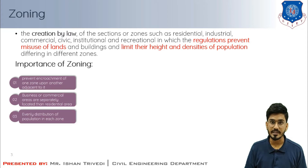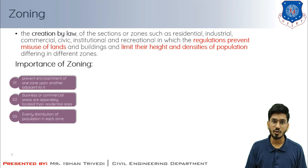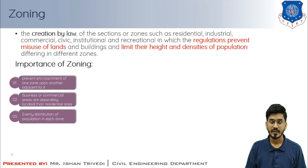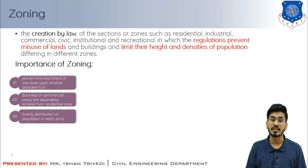Zoning prevents the encroachment of one zone upon another adjacent zone. For instance, the industrial area is located away from the residential area so that residents are not affected by dangerous gases and smoke. Business or commercial areas are also separately located, with their garages and service stations at a distance from residential areas, keeping them free from noise and road traffic. The population is distributed throughout the town by zoning regulations so that there is no concentration of population in any particular zone — meaning the population is evenly distributed.